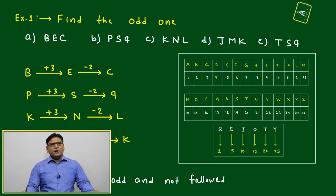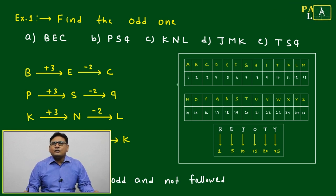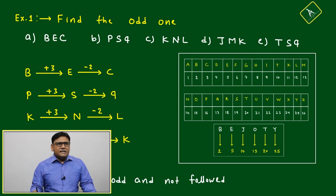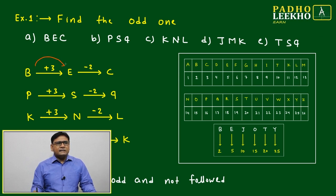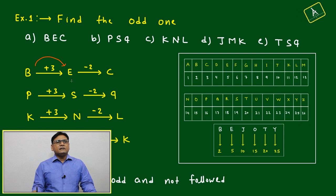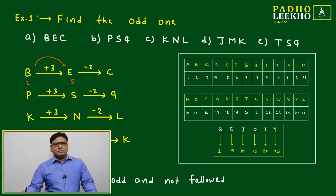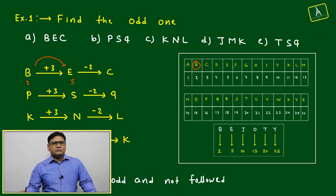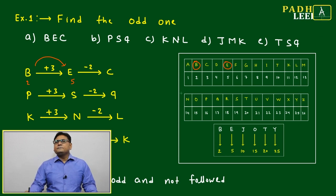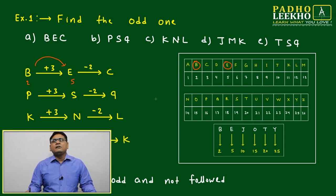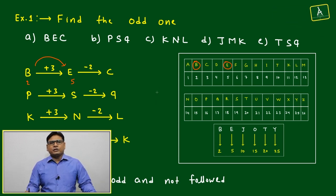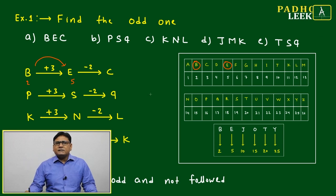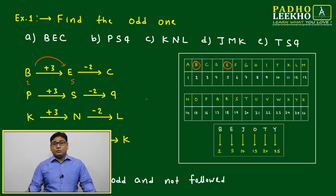We'll check how these letters are jumbled. First we'll check BEC. After B, if we add 3 then we come to E. We'll check here — if you have a handy alphabet position table or remember the relative positions of alphabets, it will be easy.